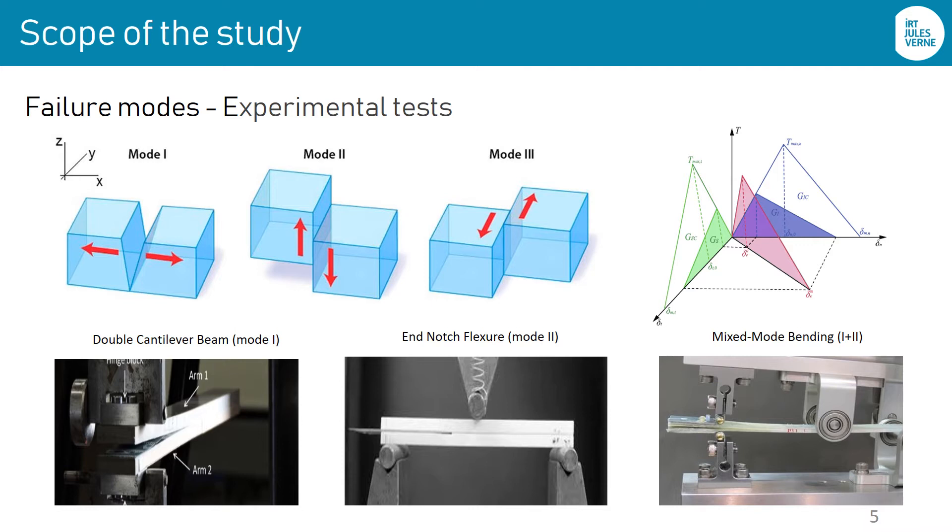The figures below show the standardized tests required to characterize the behavior of interfaces according to the type of mode. The DCB test is required for mode 1 characterization. Mode 2 is characterized using the ENF test. Concerning the mixed mode, MMB test is required.